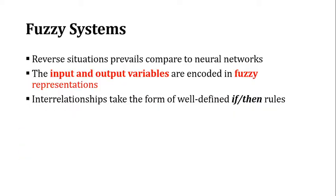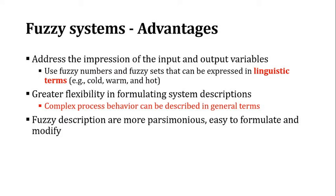In case of fuzzy systems, it's just opposite - the idea of fuzzy is kind of reverse compared to neural networks. The input and output variables are encoded in fuzzy representation, which is a pretty important part. Interrelationships take the form of well-defined if-then rules. The advantage is the use of linguistic terms that gives you flexibility to formulate any kind of system description, like you could use cold, warm, or similar linguistic terms in your system.